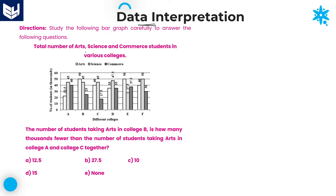we need to read the information carefully and then solve the questions according to the given information. If you look at the information carefully, it shows the total number of arts, science and commerce students in various colleges. Whatever values are provided in this bar graph represent students from arts, science and commerce who joined various colleges A, B, C, D, E, and F. All values are provided in terms of thousands.